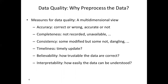The measures of data quality include accuracy — whether the data is correct or not. Second is completeness — whether we can access all the data, or if some records are missing or unavailable. Third is consistency — some data may be modified while some is not given. The next one is timeliness — whether the data is timely updated or not.